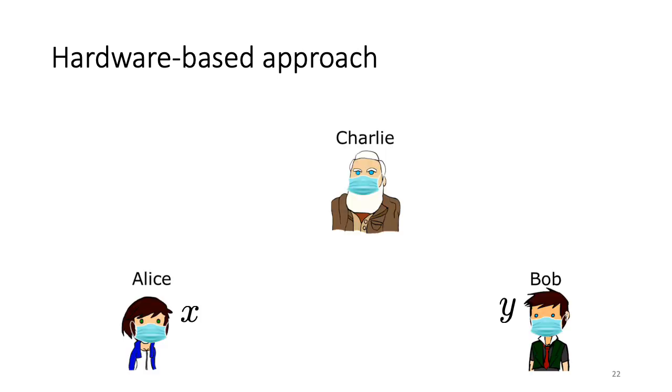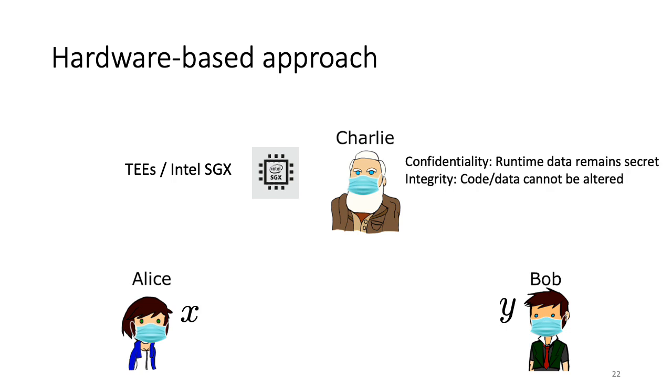Coming to the second approach of using secure hardware to get malicious security. Let us consider two users Alice and Bob who wish to compute a function F on their private inputs X and Y. They can ask a third-party Charlie who has access to a secure hardware component to help them with the computation. The secure hardware, for example Intel SGX provides two guarantees, confidentiality and integrity. The former guarantees that all the run-time data remains secret from Charlie, while the latter ensures that Charlie cannot alter the code or its associated data while the computation is being performed inside the secure hardware. With these guarantees in place, Alice and Bob can comfortably send their inputs encrypted under the secure hardware's key to Charlie during run-time and get F back from him.